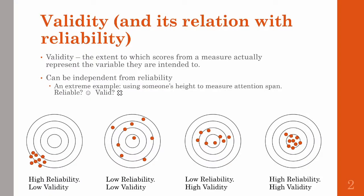Now we'll talk about the second dimension researchers use to evaluate measures, which is validity. Validity is the extent to which scores from a measure actually represent the variable they are intended to. Validity is, for our purposes, independent from reliability. You can have an extremely reliable measure that has really poor validity. If a researcher wanted to measure attention span using someone's height, they would be heavily criticized. Measuring someone's height is no doubt a really reliable measurement that doesn't change much in adulthood, but height in no way measures or is related to someone's attention span, so that would have really low validity.